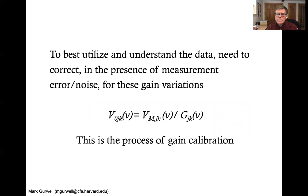So to best utilize and understand the data, we need to correct in the presence of all the measurement errors and noise that we have for the gain variations. That is, we want to take our measured visibilities, correct them with some gain measurements that we could hopefully make to get what we would consider our best estimates of the true visibility. And this process is called gain calibration.